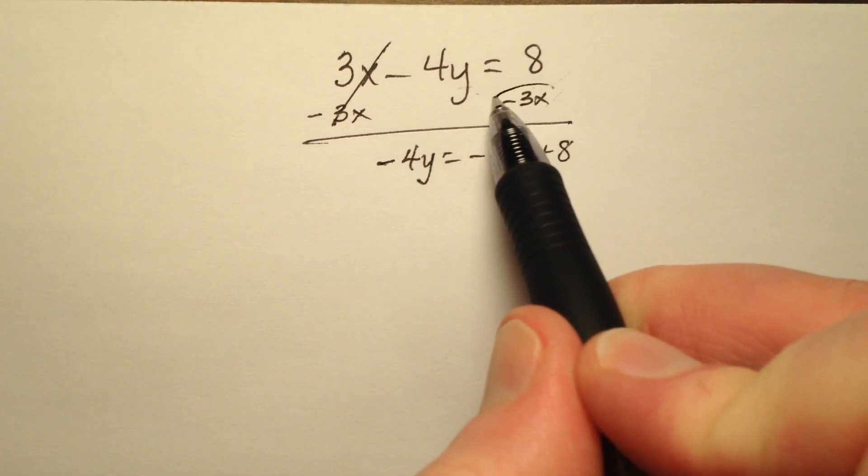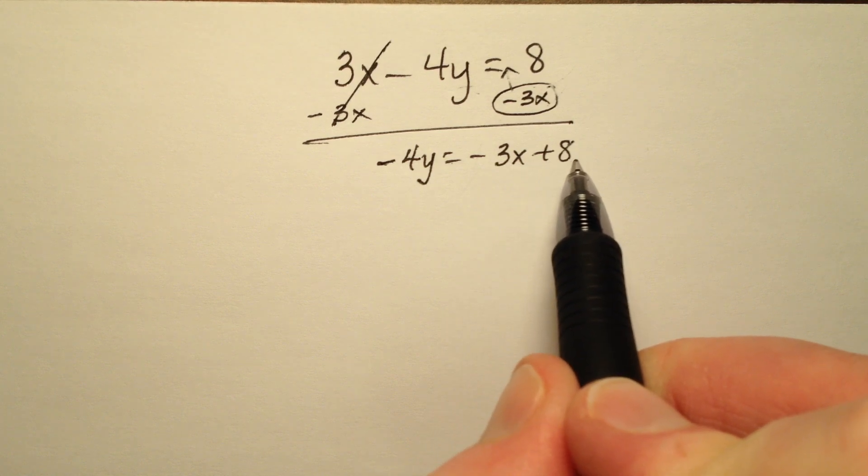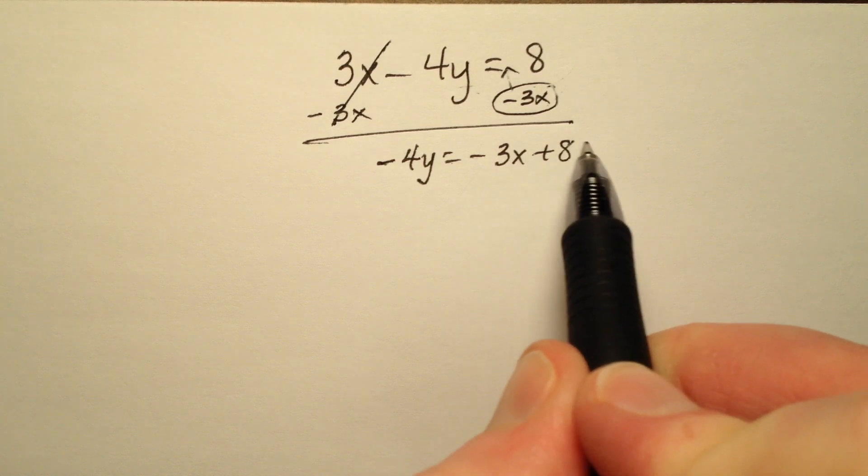And the reason I'm going to sneak the x in front is because I want it in y equals mx plus b form, so I want the x before my constant.